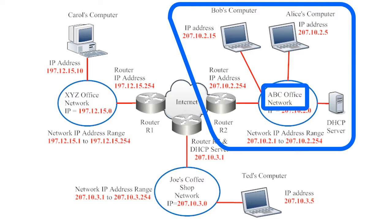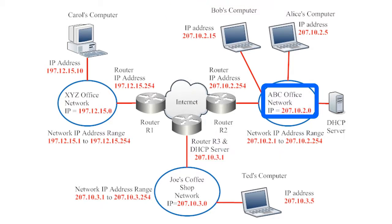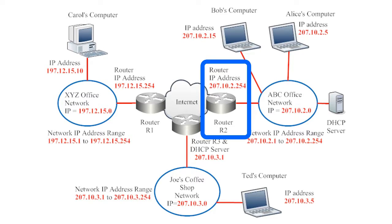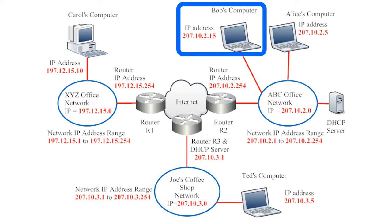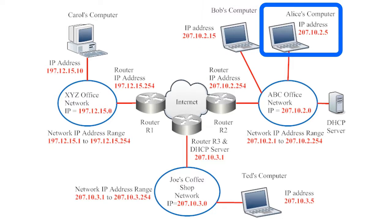For an example of dynamic IP address assignment, let's take a look at the ABC office network on the right side of the illustration. The ABC office network is at IP address 207.10.2.0. Just like the XYZ office network, devices can use any IP address starting with those first three numbers and ending with any number from 1 to 254. The router took the IP address ending in .254, Bob's computer took .15, and Alice's computer took .5.